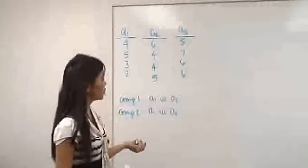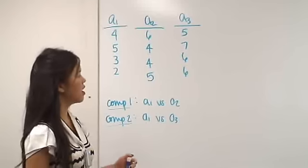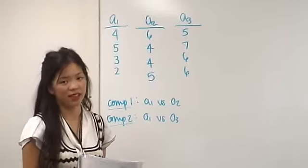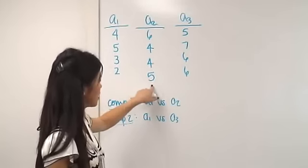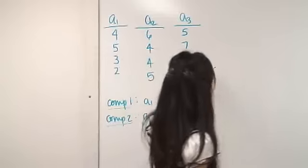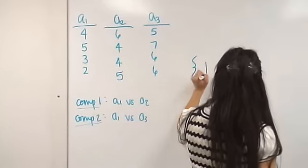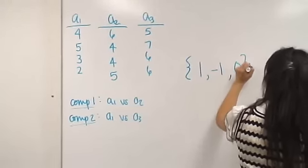So to start off with a comparison, we need to assign coefficients. Coefficients are just an arbitrary way of mathematically calculating it. So say for example, if I'm doing A1 versus A2, all my coefficients need to add up to zero. So for my first comparison, I'm going to assign A1 one, A2 minus one, and A3 zero.